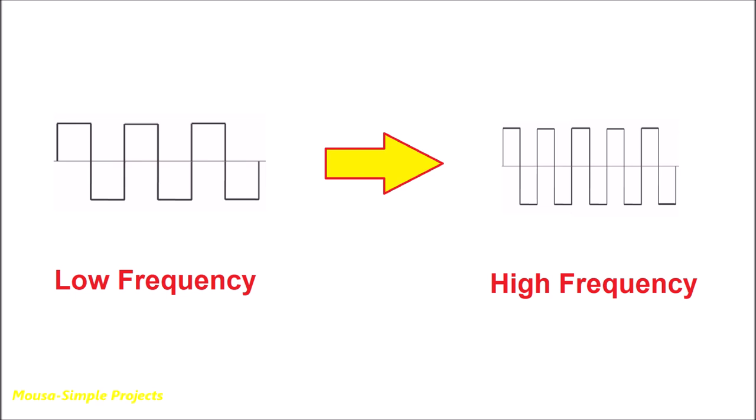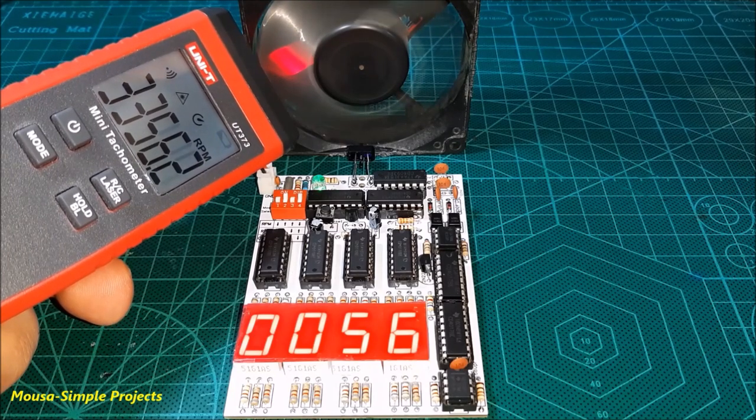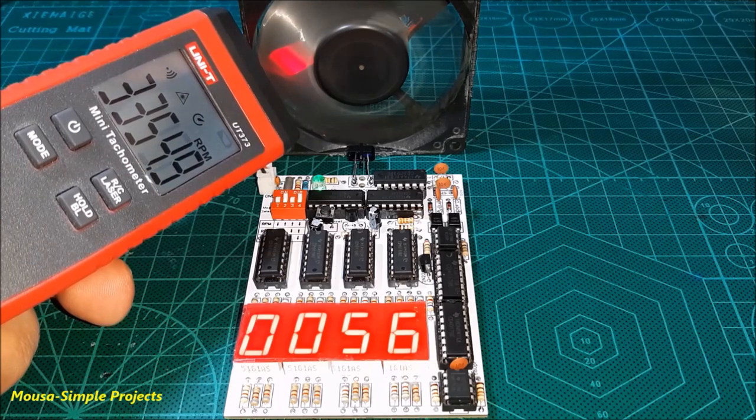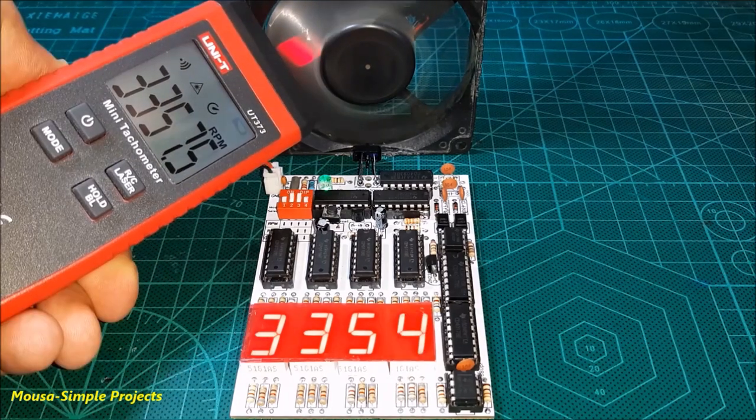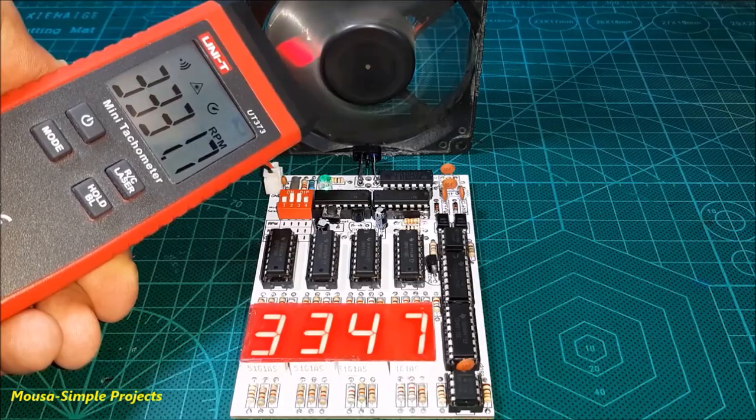Now let's talk about frequency multipliers. A frequency multiplier is more complicated than a frequency divider. I used a frequency multiplier in my tachometer project to convert RPS to RPM by multiplying it by 60.